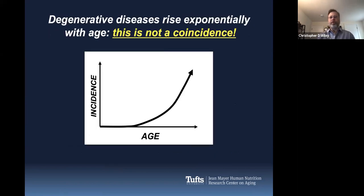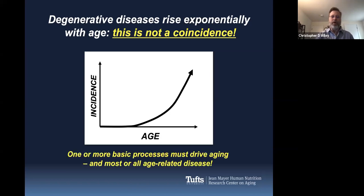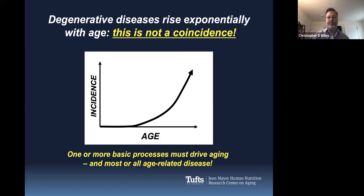We know that degenerative diseases rise exponentially with age, and it's not just one disease, it's a lot of diseases all at once for most people. We don't think this is a coincidence. There have to be one or more basic processes that drive aging and most or all of these age-related diseases. If you can target those basic aging processes, you can prevent multiple diseases as we get older. Our goal here is to change that incidence so that we can live healthier lives as we get older.